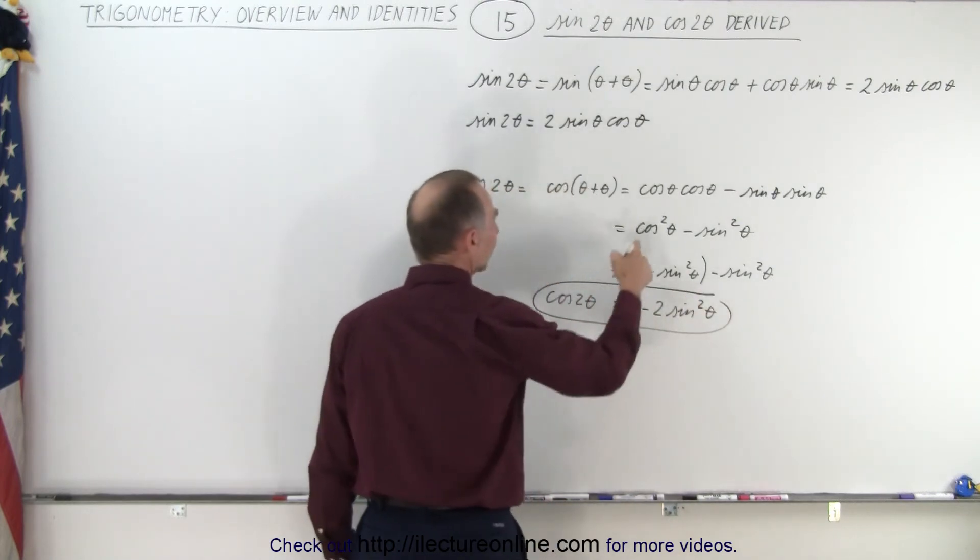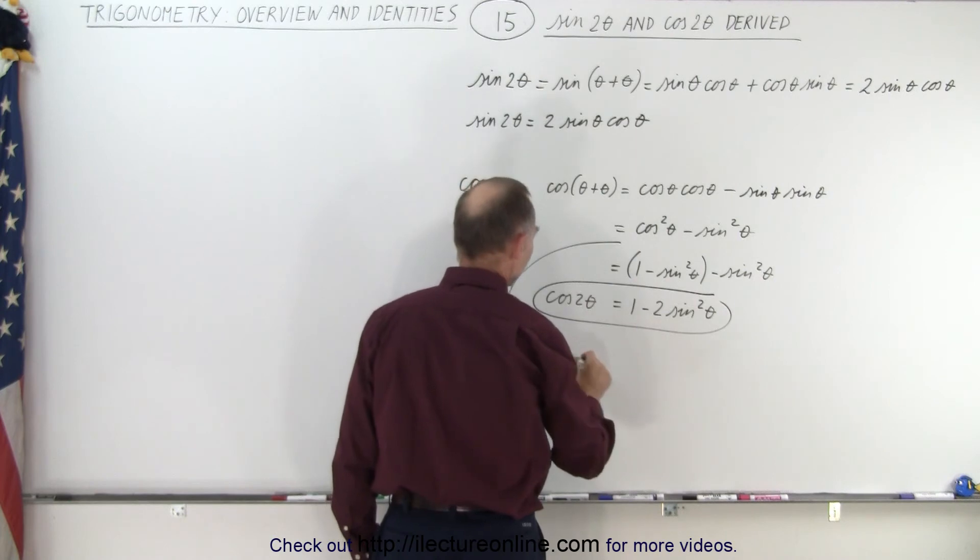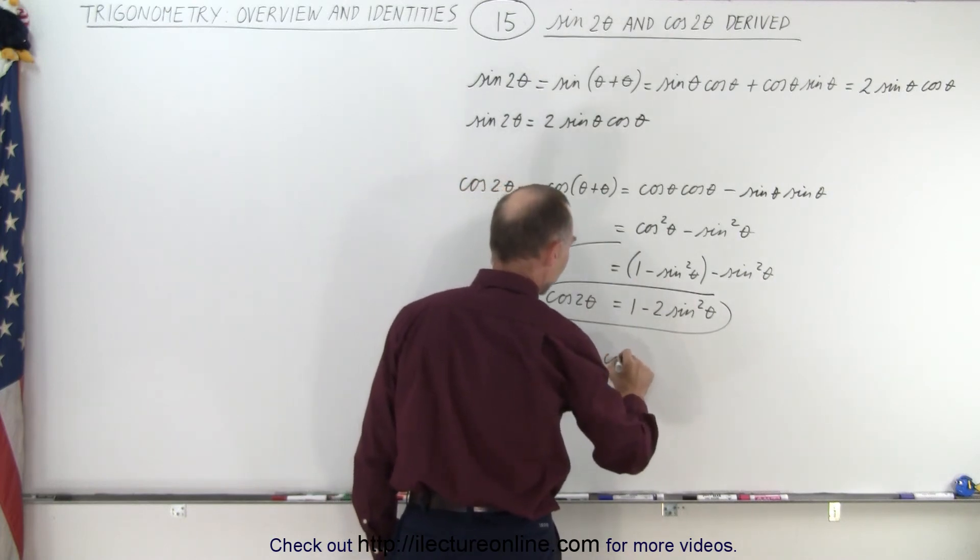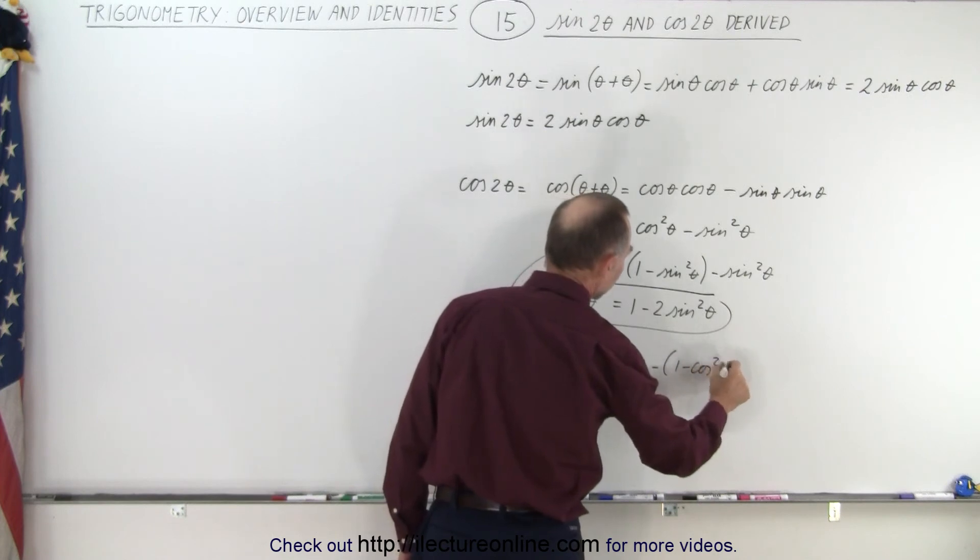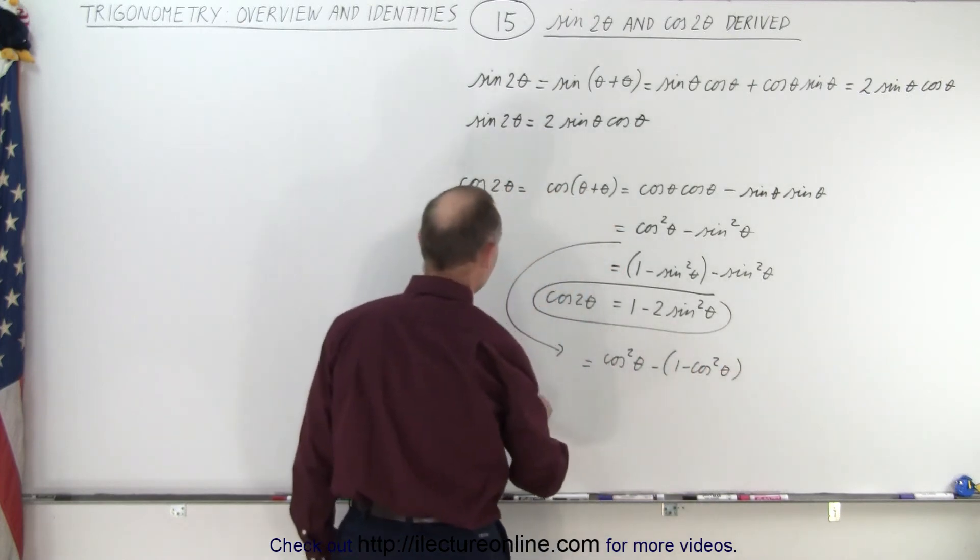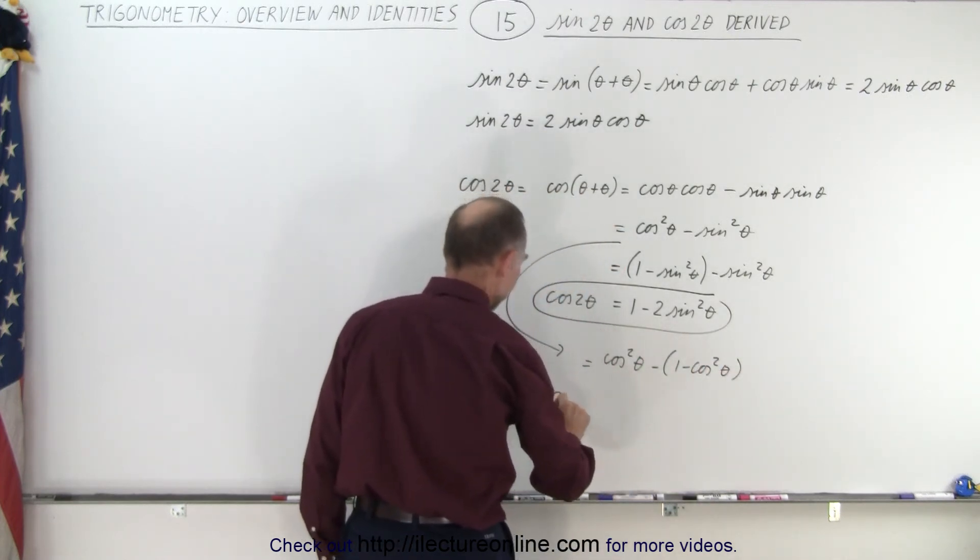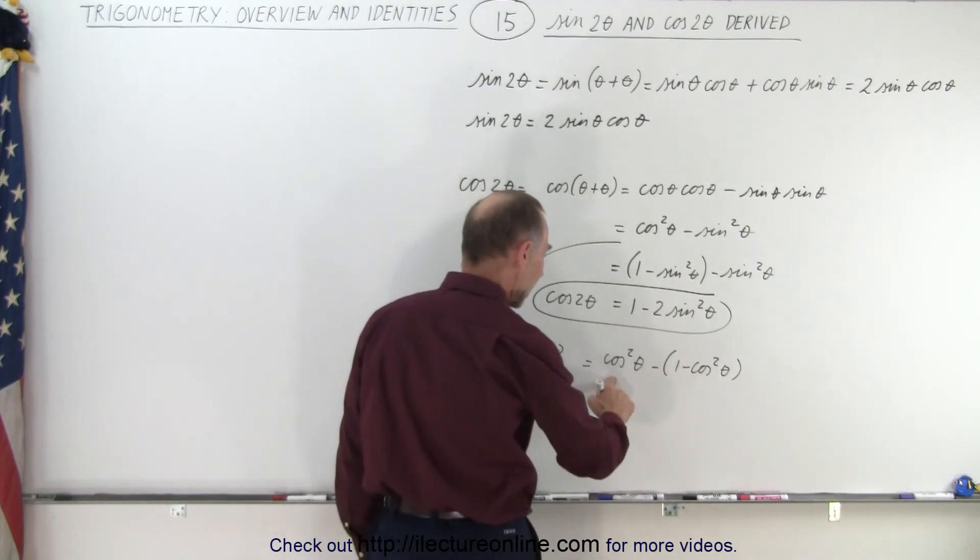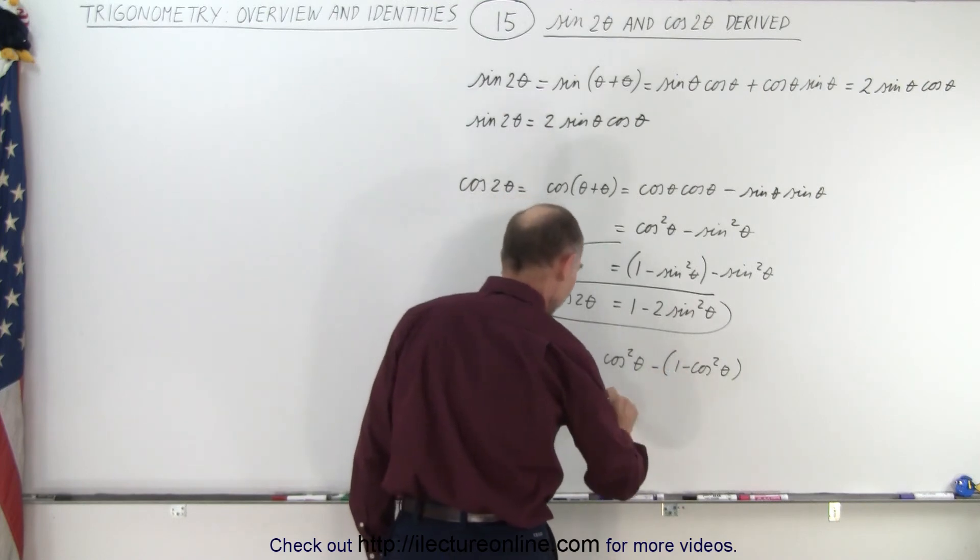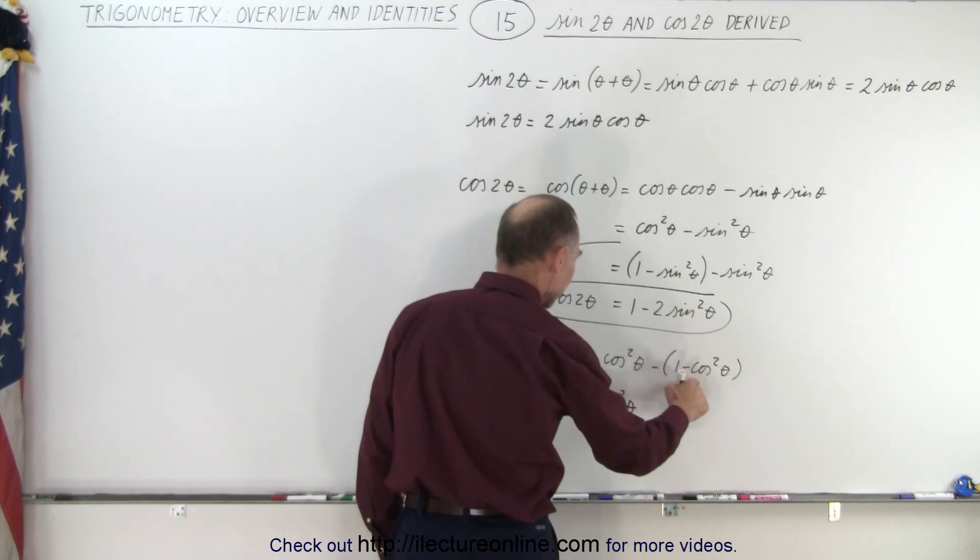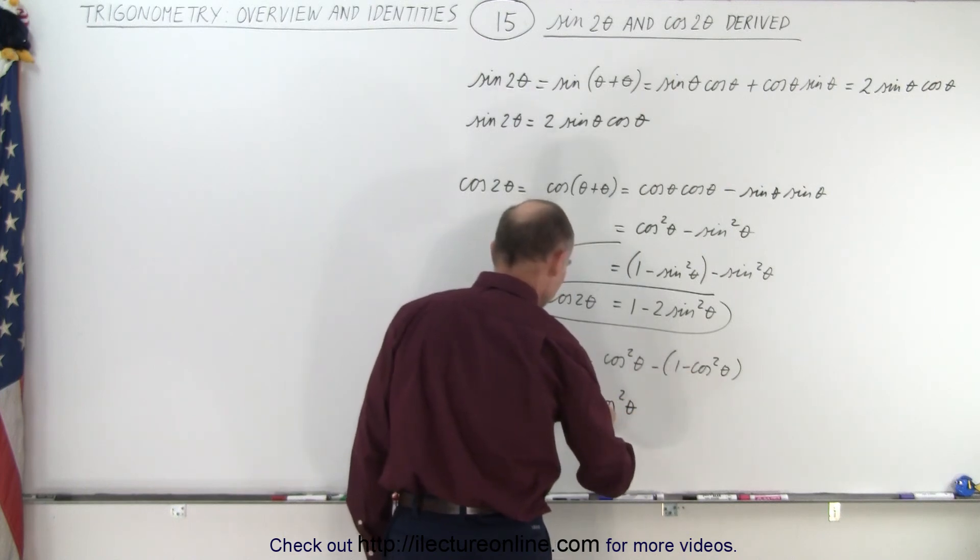Starting from here, we can also write it as cosine squared of theta minus one minus cosine squared of theta. The cosine of two theta can be written as, minus times minus is plus, so this would be cosine squared of theta, two of them. That would be equal to two cosine squared theta minus one.